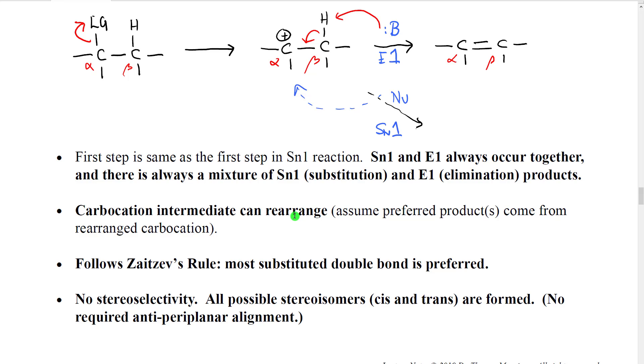Again, the carbocation can rearrange. And we're just going to assume that our preferred products come from the rearranged carbocation when that is appropriate. This one always follows Zaitsev's rule. The most substituted double bond is preferred. We don't really have a Hoffman equivalent of this reaction. And finally, there is no stereoselectivity. Instead, what we're going to get is a mixture of both cis and trans isomers. There's no requirement for anti-periplanar alignment.